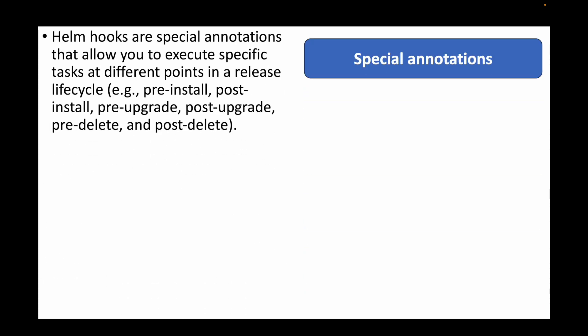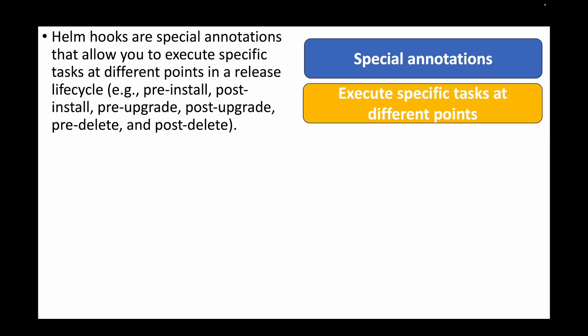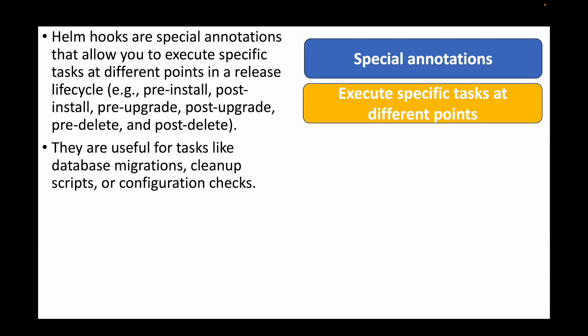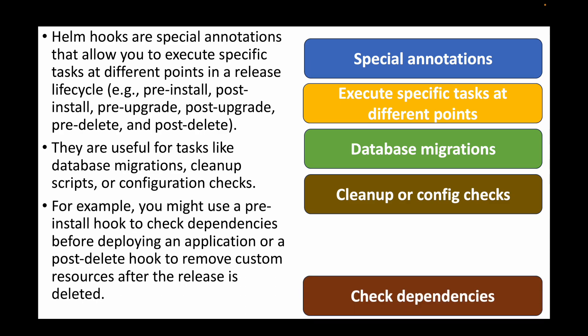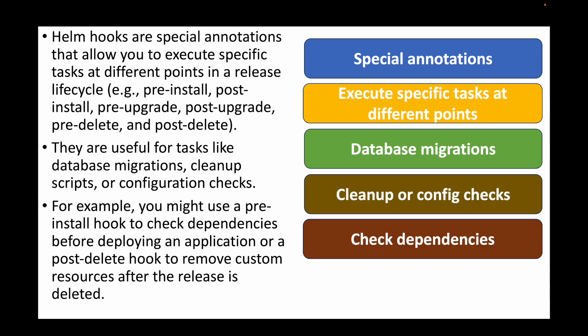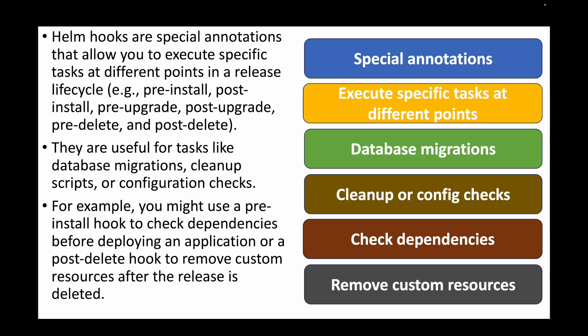The next question is: what are Helm hooks and how can they be used? Helm hooks are special annotations that allow us to execute specific tasks at different points within your release lifecycle — such as pre-install, post-install, pre-upgrade, post-upgrade, pre-delete, and post-delete. This is useful for tasks like database migrations, cleanup scripts, configuration checks, or validations. For example, you might use a pre-install hook to check for dependencies before deploying an application, or a post-delete hook to remove custom resources after a release is deleted.